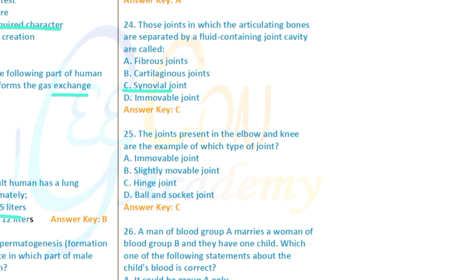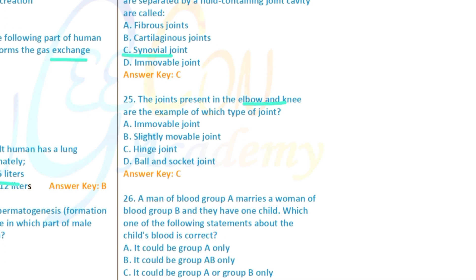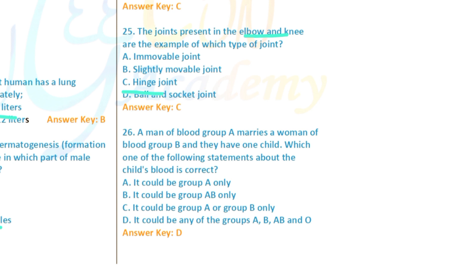Question 25: The joint present in the elbow is an example of which type of joint? The elbow joint — it is a hinge joint. Question: A man with blood group A and a woman with blood group B have one child — which blood group can the child have?